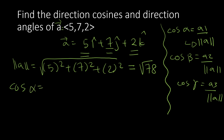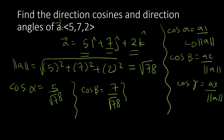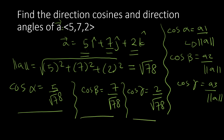Now let's find the direction cosines. Cosine of alpha equals 5 over square root of 78. Cosine of beta equals 7 over square root of 78. Cosine of gamma equals 2 over square root of 78. These three are my direction cosines.